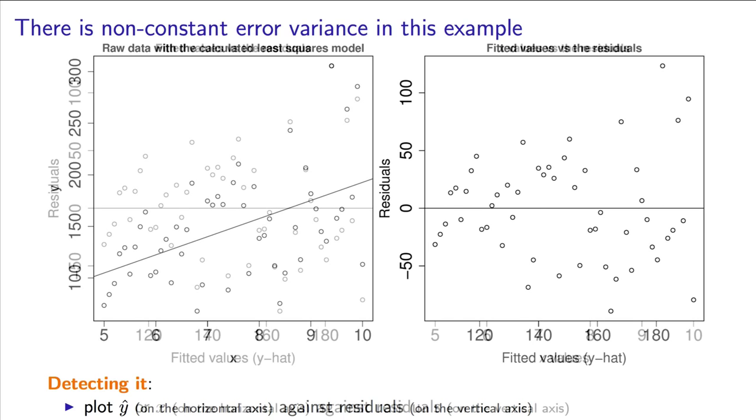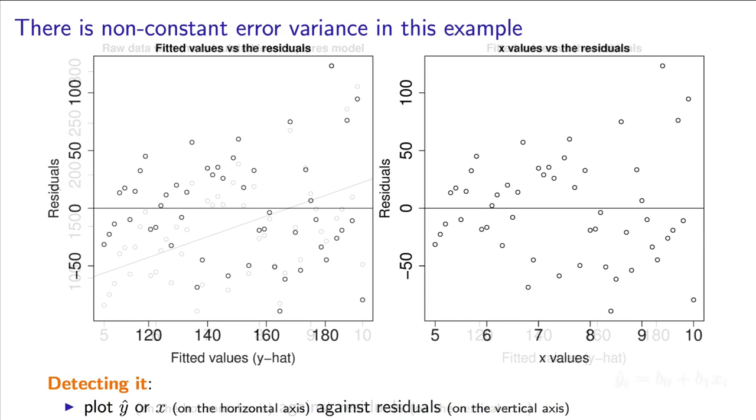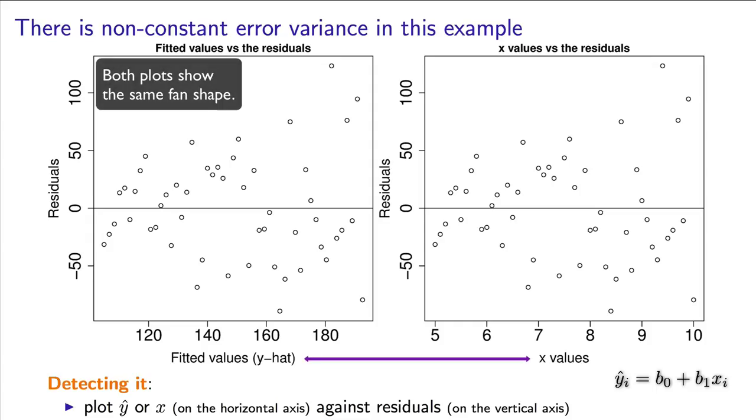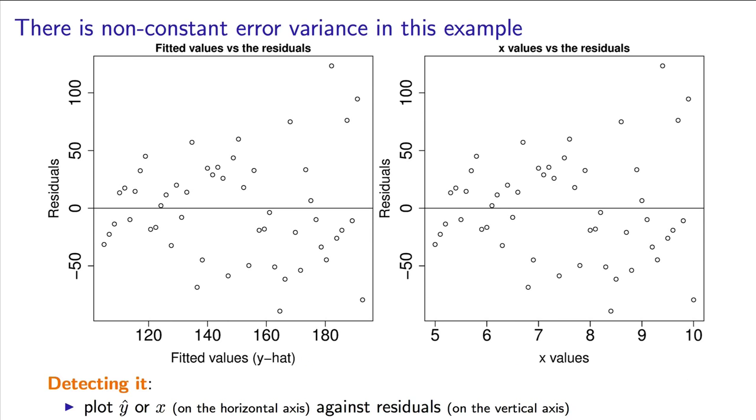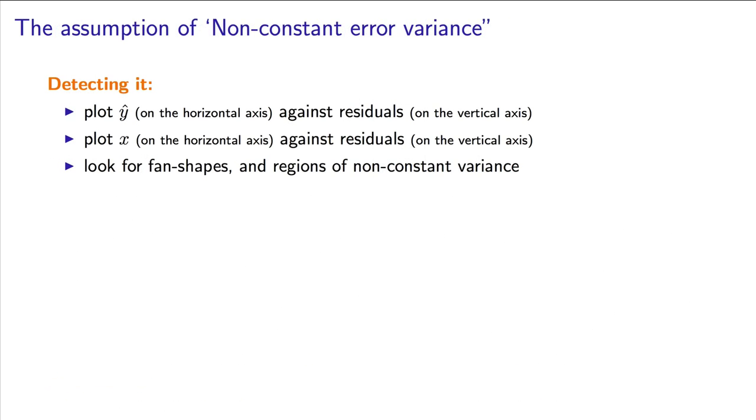And the reason why we can plot on the horizontal axis either the x or the predicted value of y is because these two numbers are related by the least squares formula. And I've confirmed that here with this plot of the same data where now I've changed my horizontal axis to b values of x. So that's how we detect non-constant error variance.